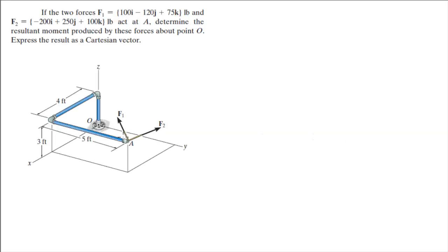For more videos visit ForTheSakeOfEducation.com. Alright guys, now we're going to do this problem that tells you if the two forces F1 and F2 act at A, determine the resultant moment produced by these forces about point O and express the result as a Cartesian vector.